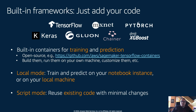Another feature is script mode, where you can take existing framework code and with very minimal changes run it inside one of those containers — there is no learning curve. If you have existing TensorFlow or PyTorch code and want to train it on SageMaker, you can adapt it in about five minutes.